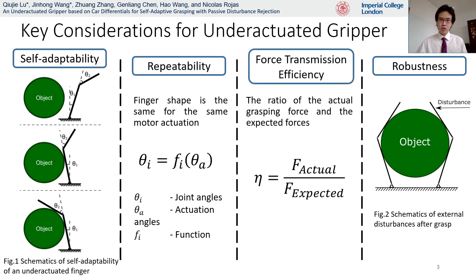As a very brief introduction, underactuation is quite common for robotic manipulators, since their control is simple and efficient. For underactuated grippers, there are a few considerations as listed on this slide: self-adaptability, repeatability, force transmission efficiency, and robustness. Firstly, the self-adaptability of a finger is an important feature, as it can enhance the gripper's power grasp capabilities.